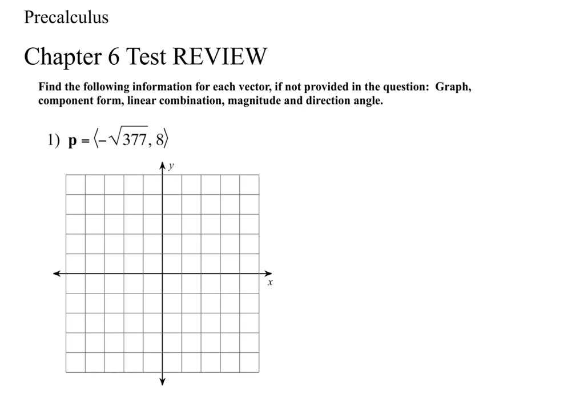The first two pages are asking for graphing — you have to graph all of them. The four things you need are: component form, linear combination, magnitude, and direction.